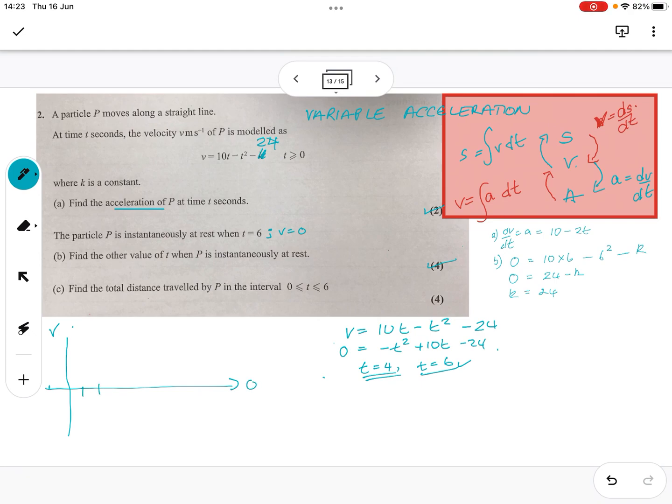So, I just want to have a quick look at what the graph looks like. We know when velocity is 0, it crosses at 1, 2, 3, 4, 5, 6. It crosses here and here. It's a negative quadratic. So, we're looking at something like that, probably. And it crosses at minus 24. So, if I make that go a bit longer and do that. So, that's minus 24. That's 4 and that's 6. And it wants the total distance.